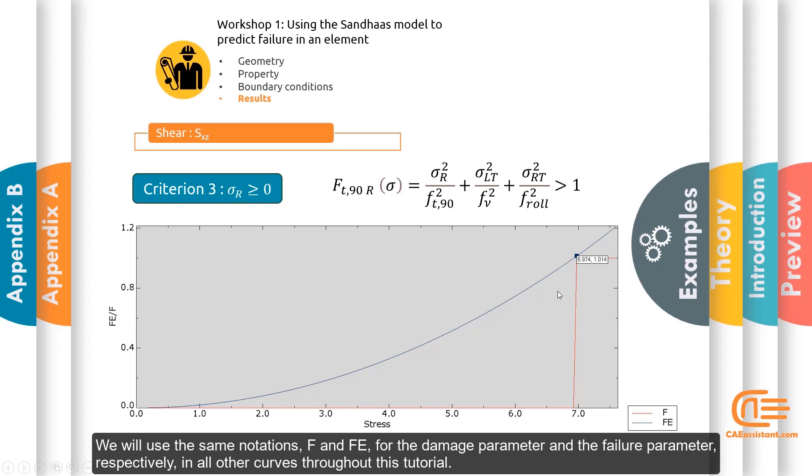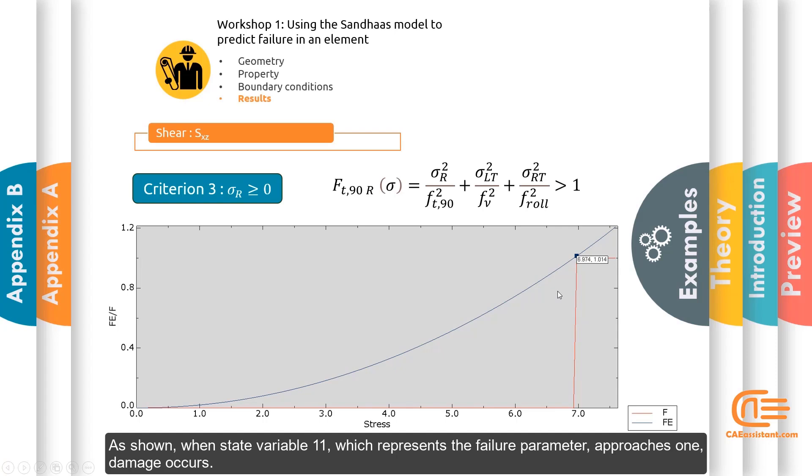We will use the same notation, F and EF, for the damage parameter and the failure parameter respectively, in all other curves throughout this tutorial. As shown, when state variable 11, which represents the failure parameter, approaches 1, damage occurs.